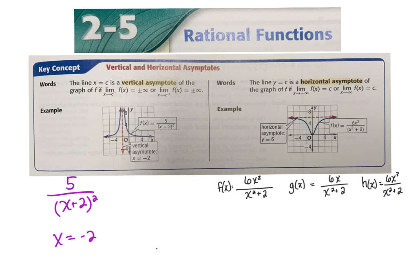Horizontal asymptotes are a little different — there's actually a shortcut. You can tell by the degrees of your numerator and denominator whether you'll have a horizontal asymptote. Look at these three functions: they look very similar except the degree of the numerator has changed. In the first, numerator degree is 2; in the second, it's 1; in the third, it's 3. The denominator degree is 2 for all of them. For the first one, the degrees are the same — 2 over 2 — so you will have a horizontal asymptote.